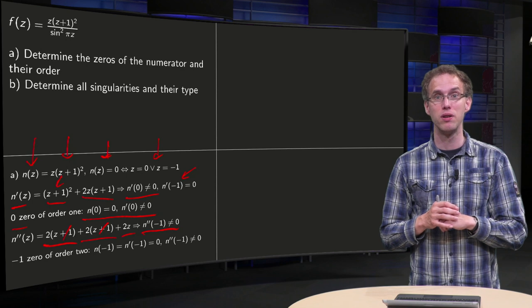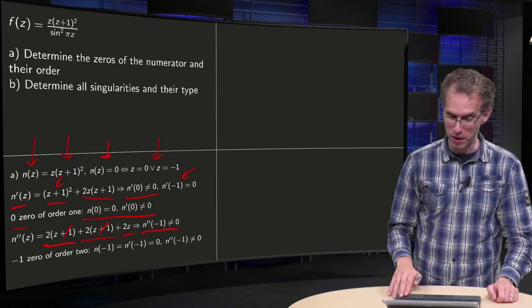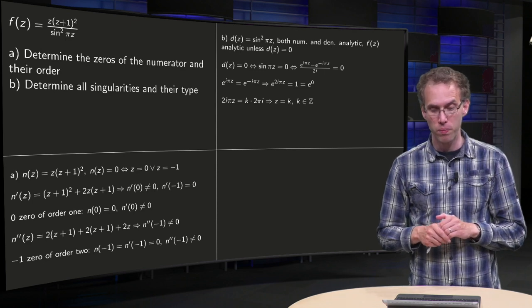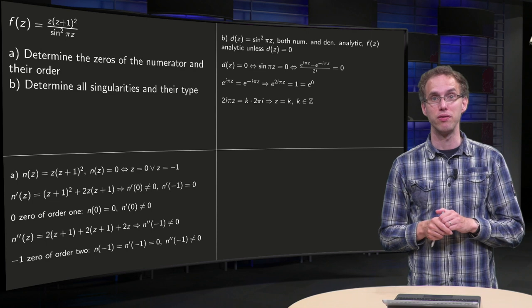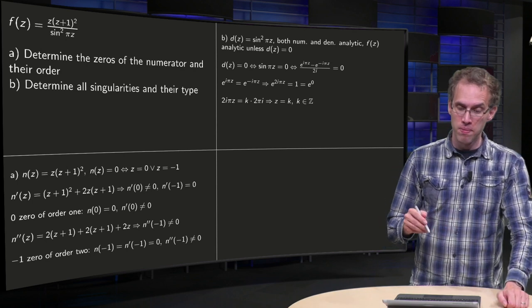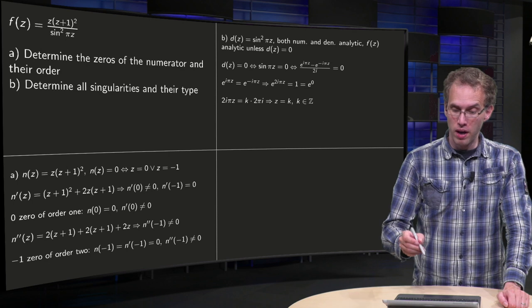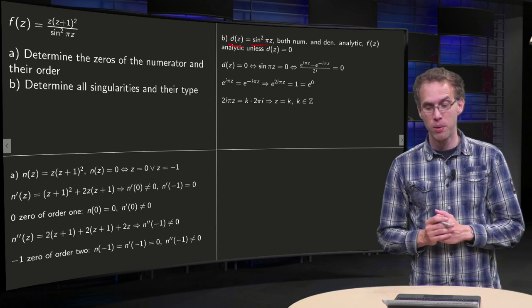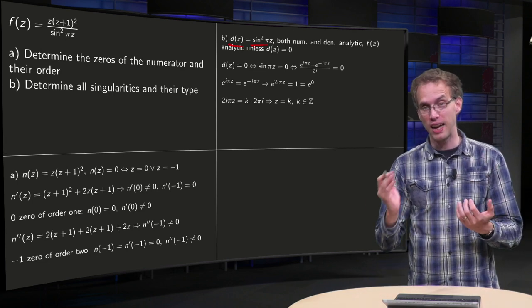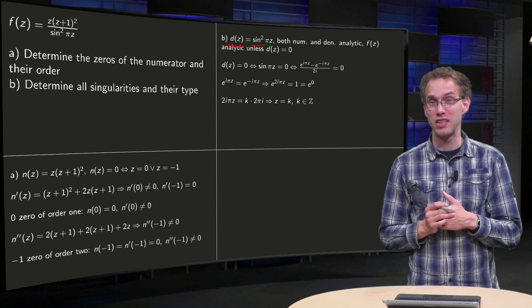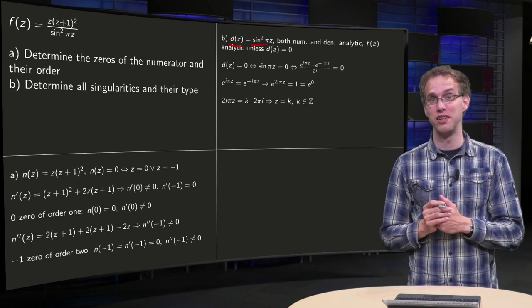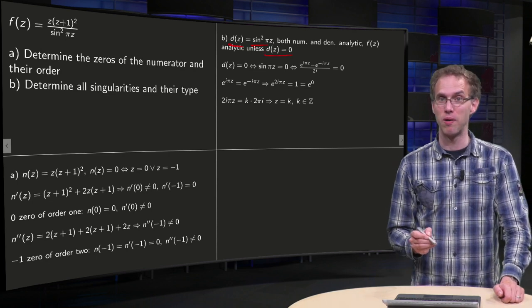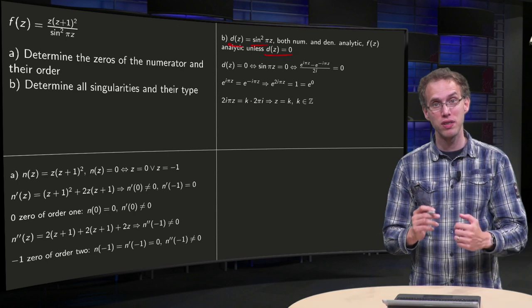So there we have the zeros of the numerator. Question B: the singularities of f of z. The denominator d of z equals sin squared of pi z. Both numerator and denominator are analytic, so f of z is analytic unless the denominator is equal to zero. So let's find the zeros of the denominator.